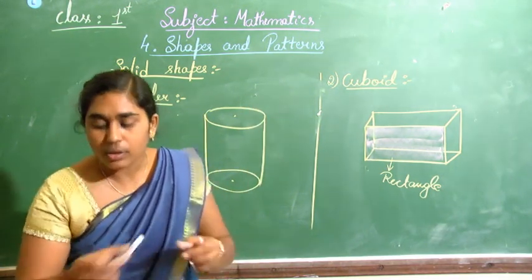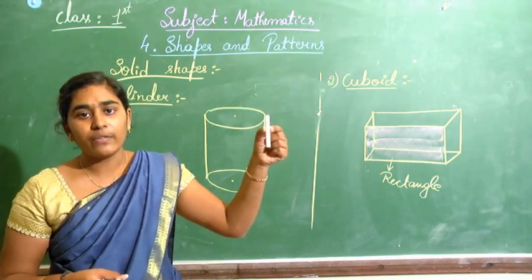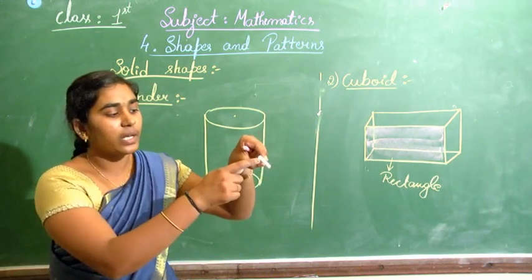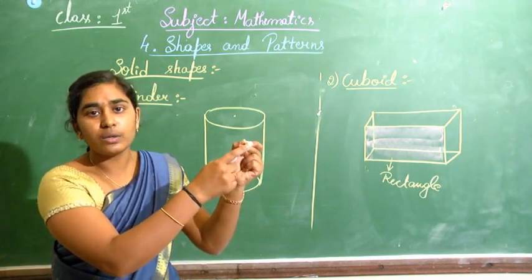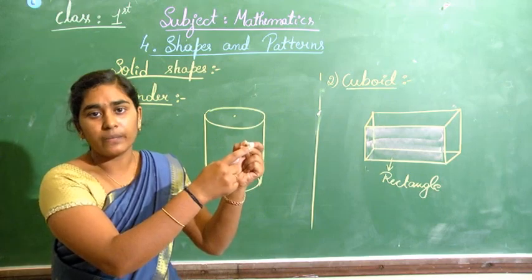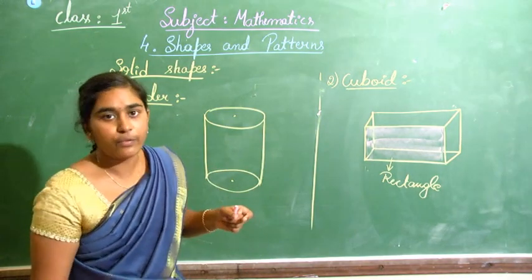This chalk piece is also an example of a cylinder — one circle on each end. So many examples you can give for a cylinder.